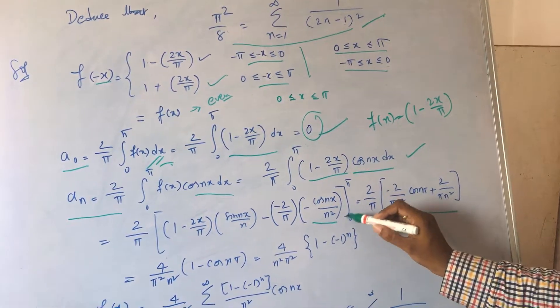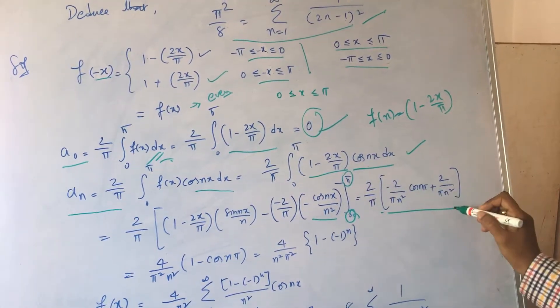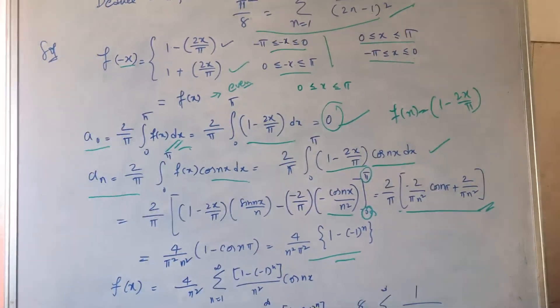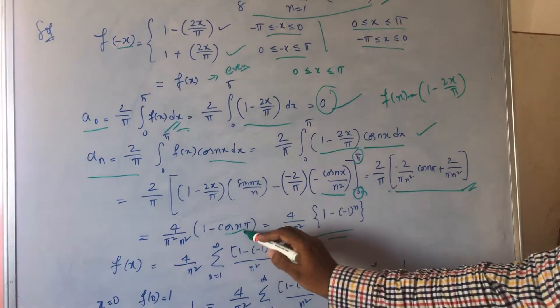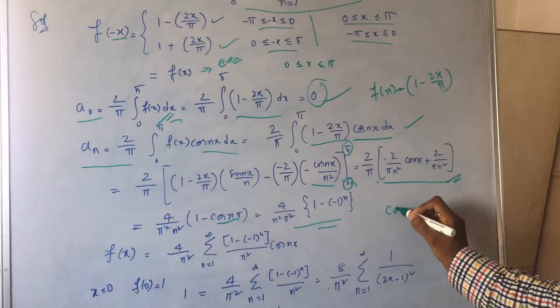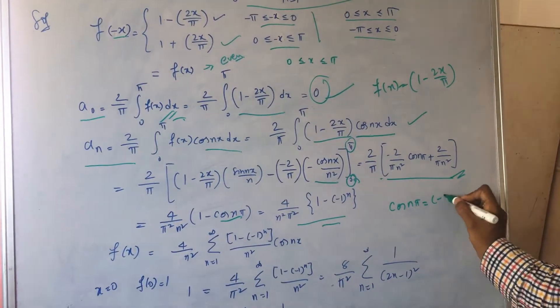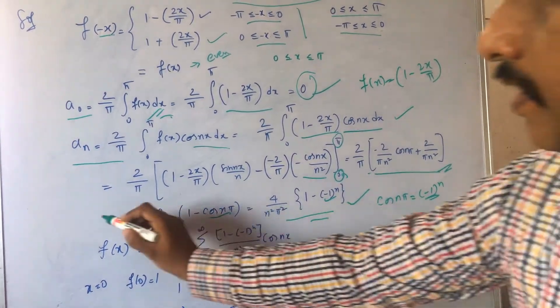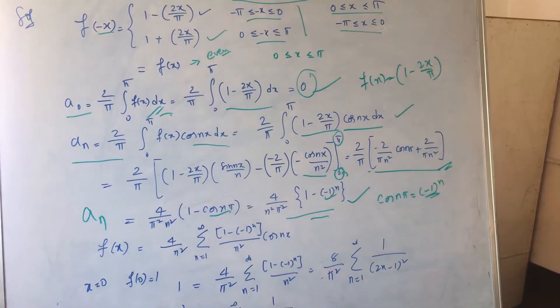After getting this, I will get this. After substituting the limits 0 to π, all the process which I have been doing: cos(nπ) can be written as minus 1 to the power of n, which I have done this. This is the constant aₙ which I get.